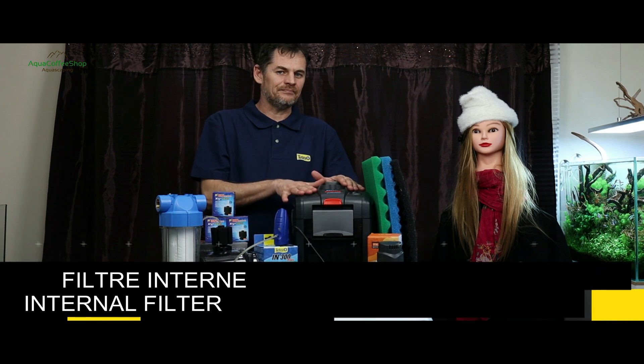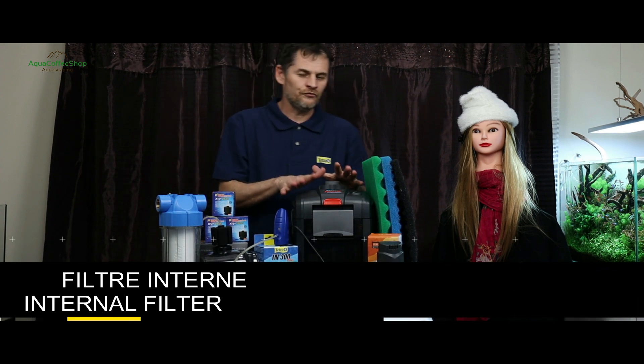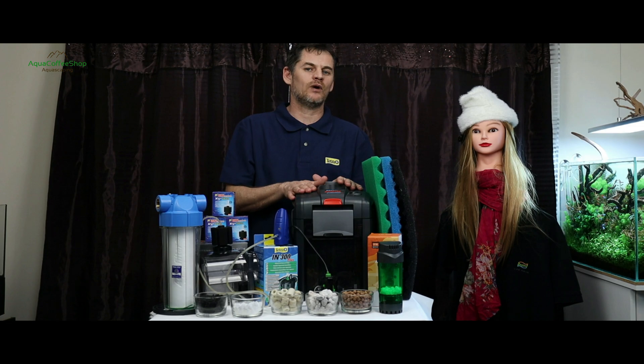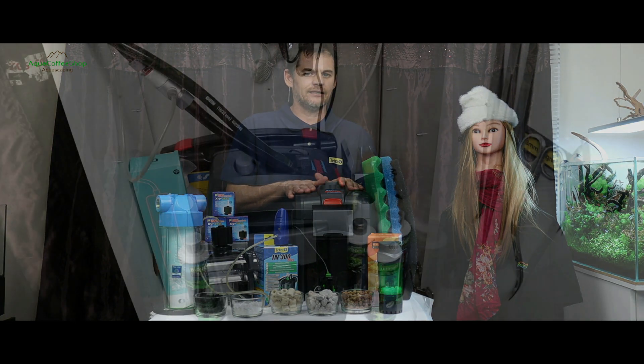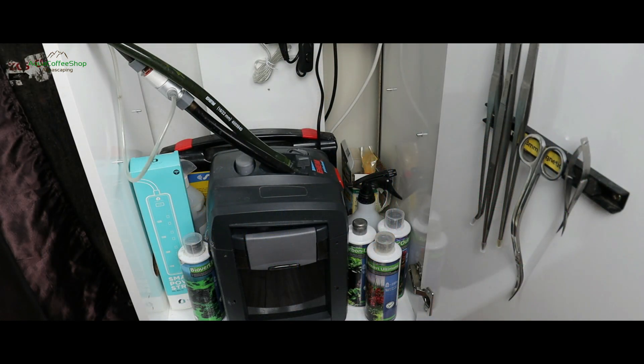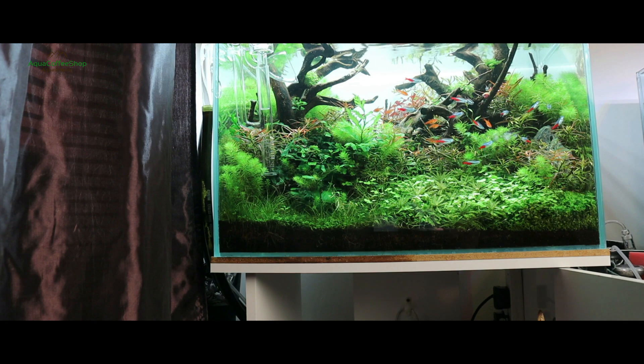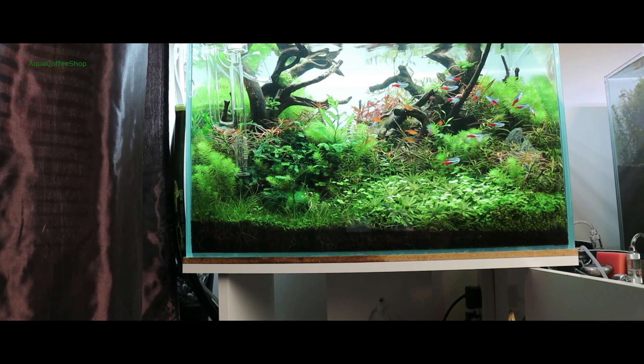External filters, or canisters, are powerful filters that are suitable for medium or large aquariums, larger than 40 liters. Because external filters are positioned outside the aquarium, they can be easily hidden behind or under the aquarium stand.